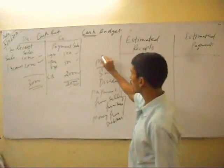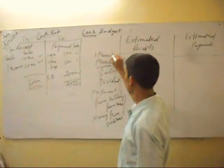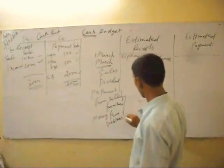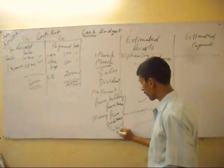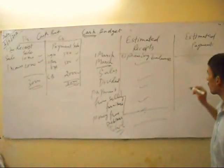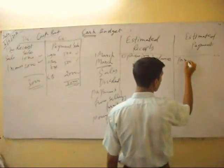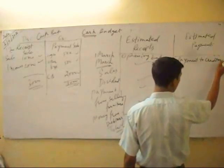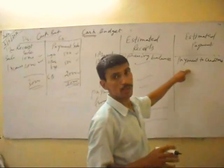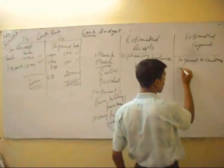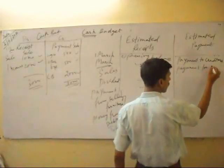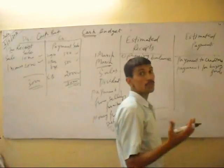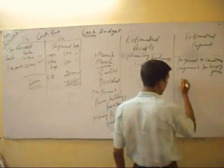We have to show all these items on the receipts side. On the payments side, we first show the March opening balance, then estimated payments such as payment to creditors and payment for buying goods on a cash basis.